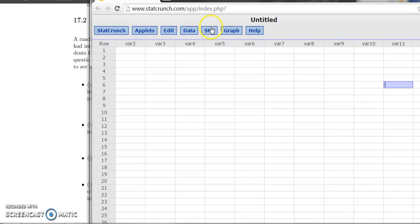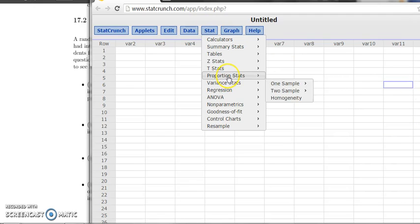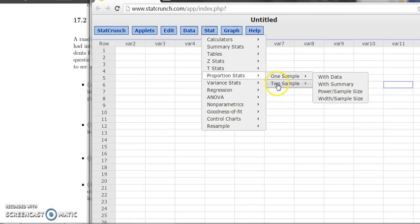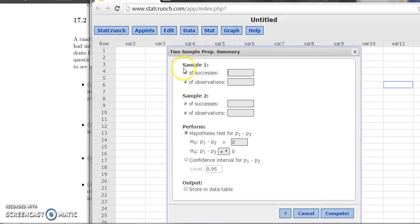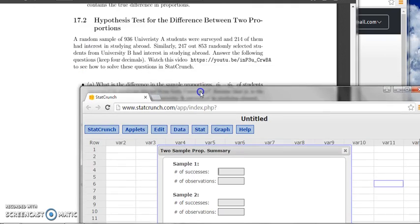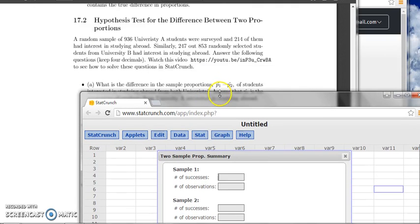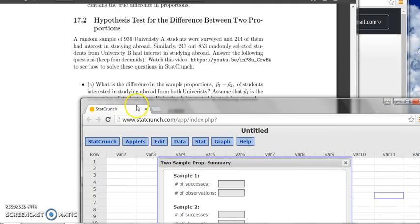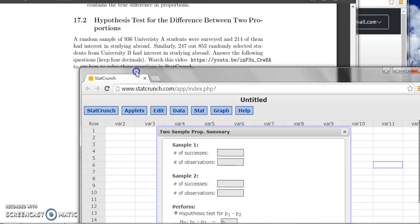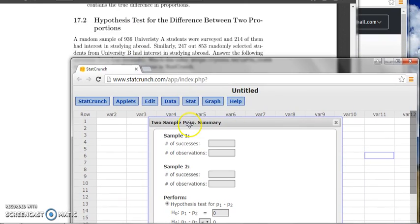So what you do is you go to Stats, Proportion Stats, and Two Samples with Summary. And you want to make sure which one is your sample one and which one is your sample two. So we say that, assume that P1 is the proportion of students from University A. So let's look at sample one as University A. So our observation is 936 and our number of success is 214.